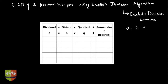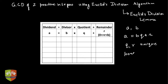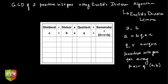So what was Euclid's division lemma? It said that if there are two positive integers a and b, then a can be expressed as b×q plus r, where q and r are unique integers for every pair of a and b, and another condition was 0 is less than or equal to r, which is less than b.